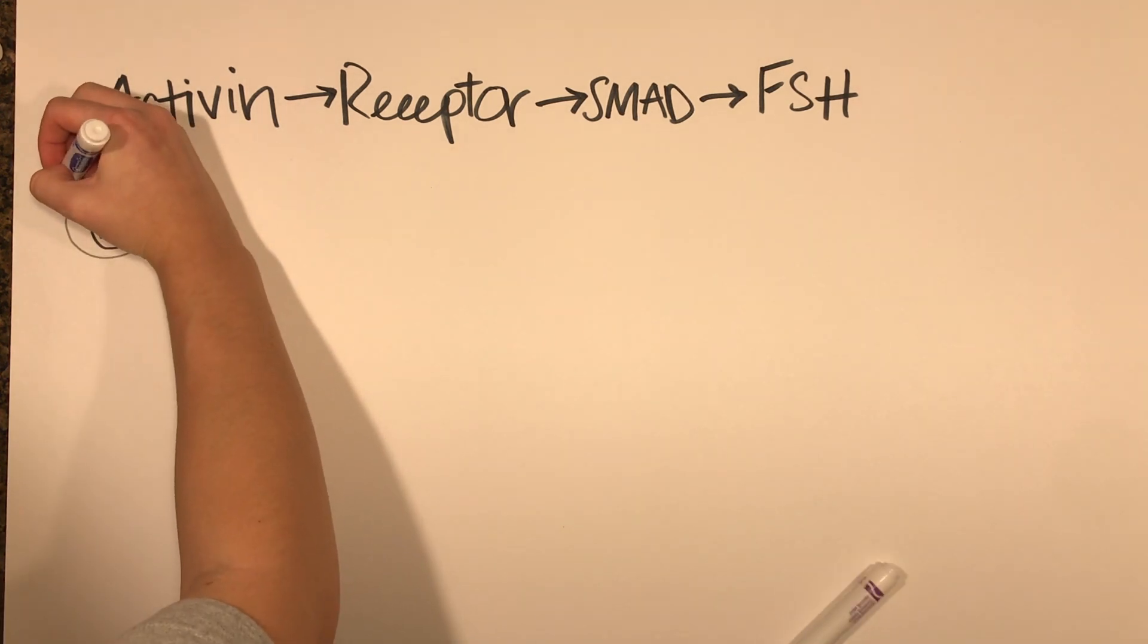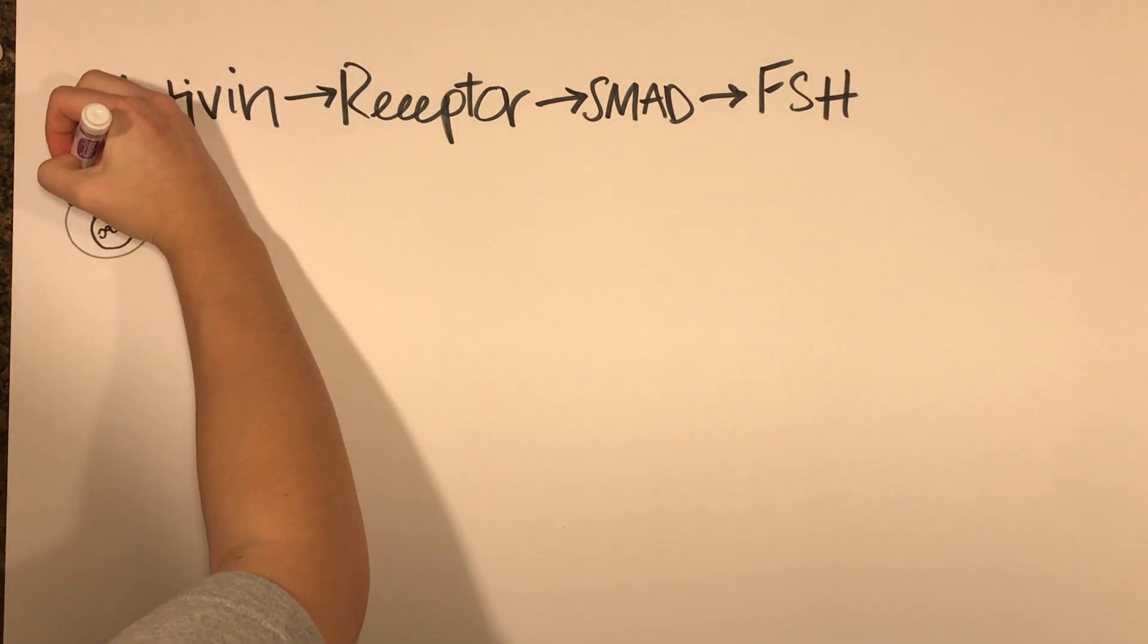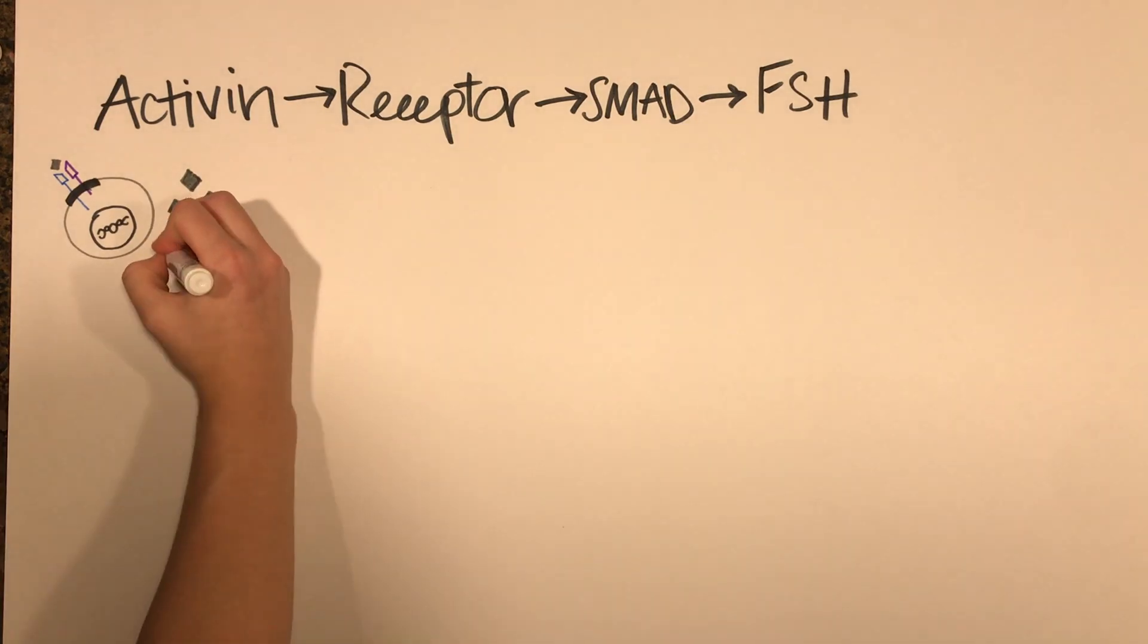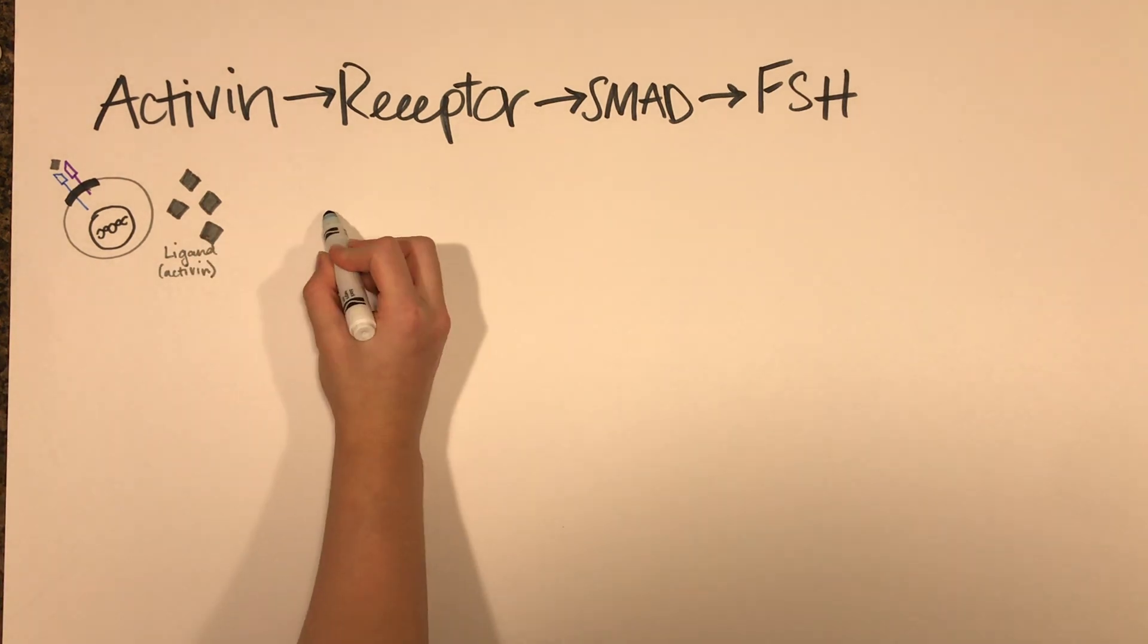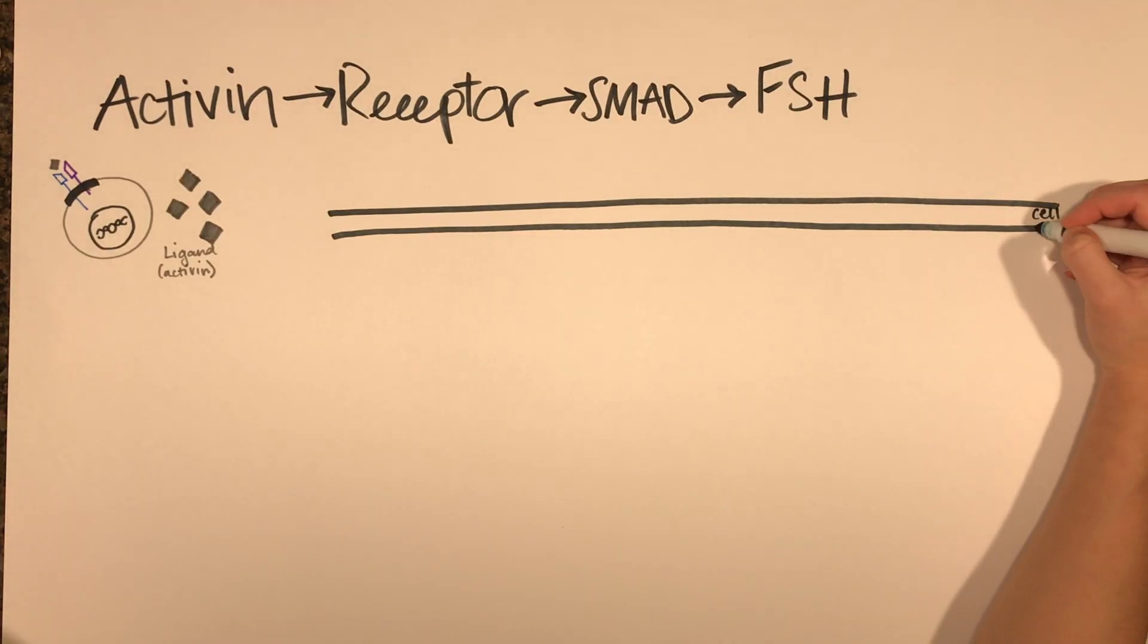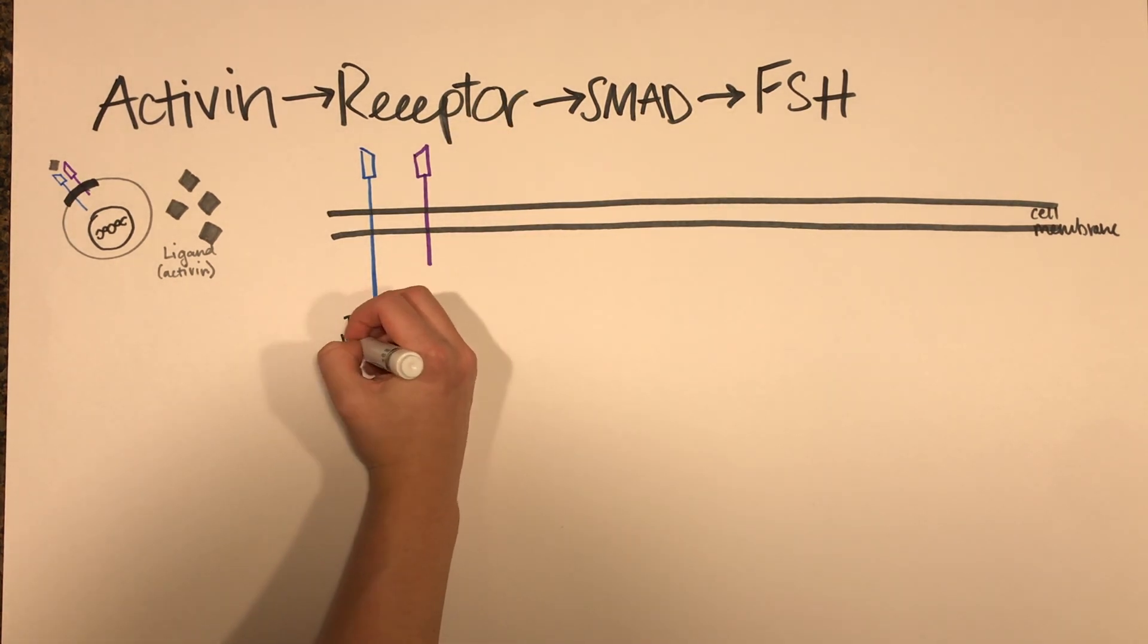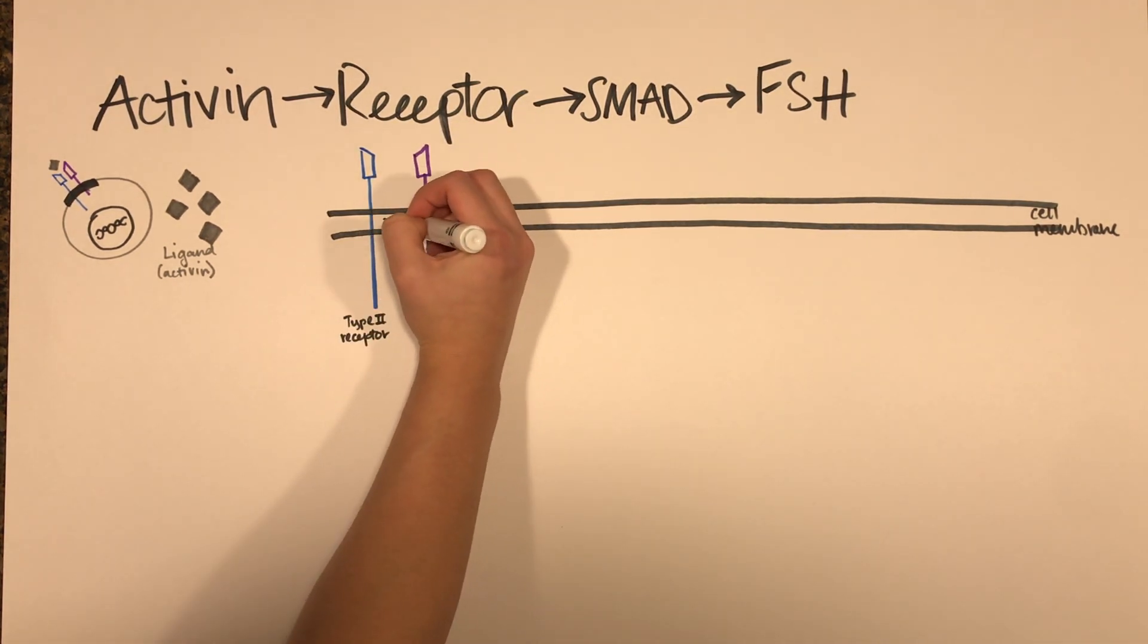So here I'm just illustrating that the receptor is in fact on the surface of the cell membrane and not within the cell. These gray diamonds here are going to represent activin, or the ligand, and then this is the cell membrane. So here in blue is the type 2 receptor component and in purple is the type 1 receptor component.